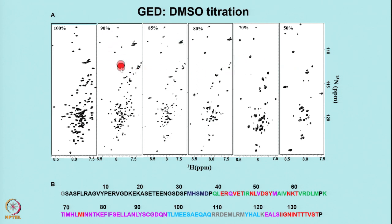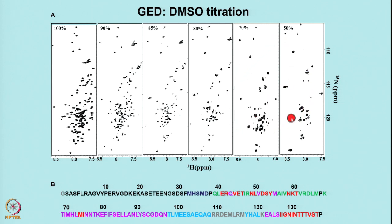At 90% DMSO you do not see as many peaks as before — only a few are seen and many have disappeared. You monitor which ones have changed. At 85% more peaks have disappeared, at 80% even more, at 70% more still, and at 50% it is essentially like the major original associated state. Beyond that point it does not help anymore because you have already reached the completely associated state.